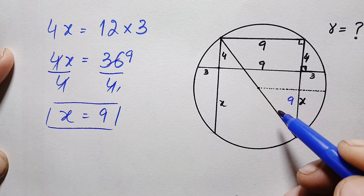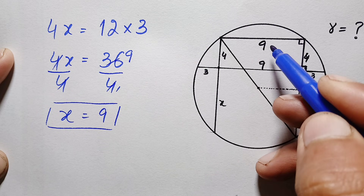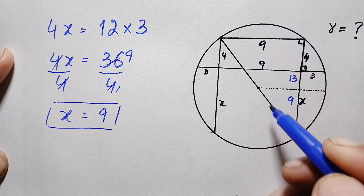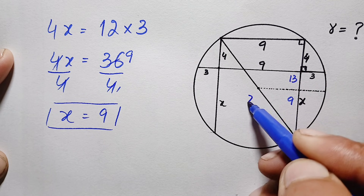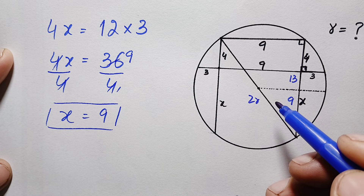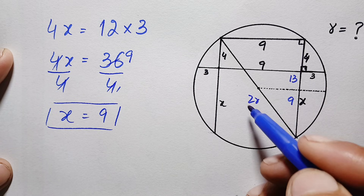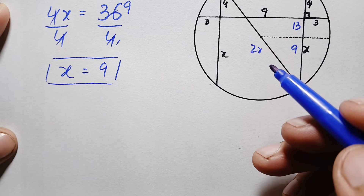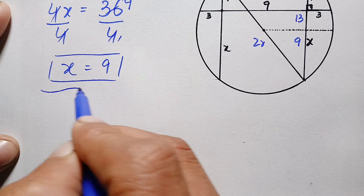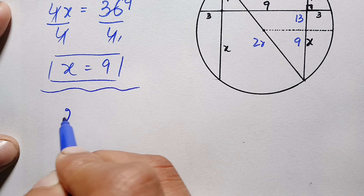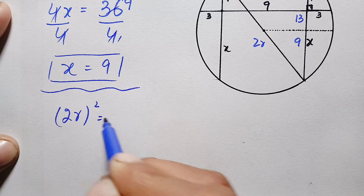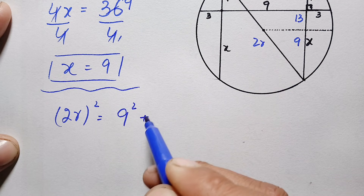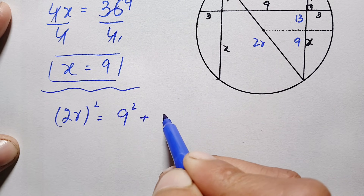Looking at this right angle triangle, we now have the lengths of all three sides. This side is nine units, this side is nine plus four which is thirteen units, and this is the diameter equal to 2r. Now we apply the Pythagorean theorem: hypotenuse squared equals base squared plus perpendicular squared, so (2r)² equals 9² plus 13².